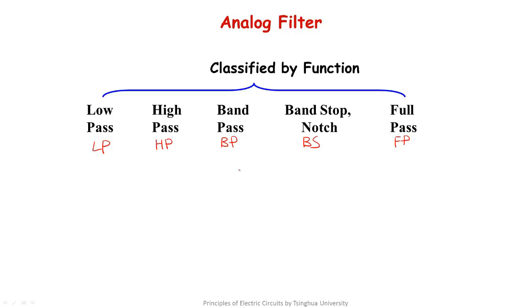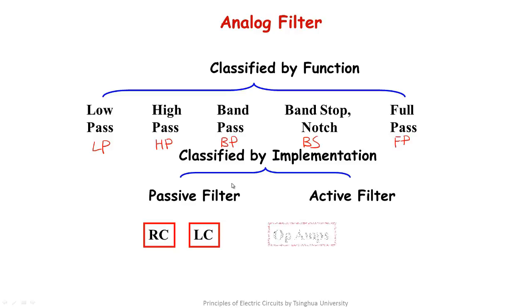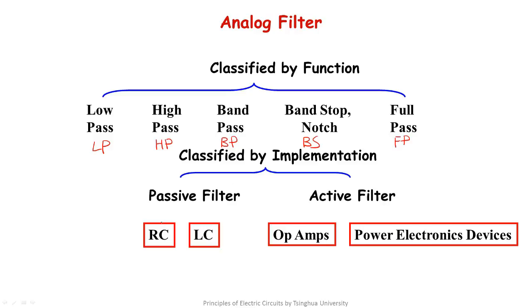It is classified by function. In addition, it can be classified by the implementation elements. As I said before, the filter implemented by passive elements is called passive filter. The one implemented by active elements is called active filter. The so-called passive filter is the filter implemented by RC or LC. The so-called active filter is the filter implemented by operational amplifier or various kinds of power electronics switches.